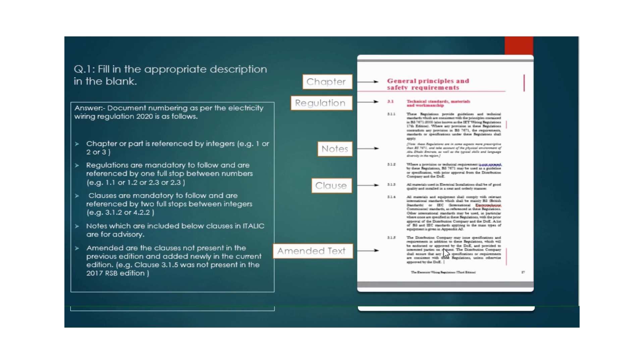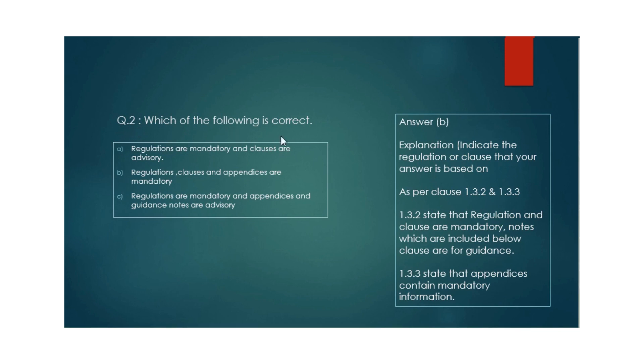Question number two: Which of the following is correct? Options: regulations are mandatory and clauses are advisory, or regulations, clauses, and appendices are mandatory and appendices and guidance notes are advisory. The correct answer is option B.